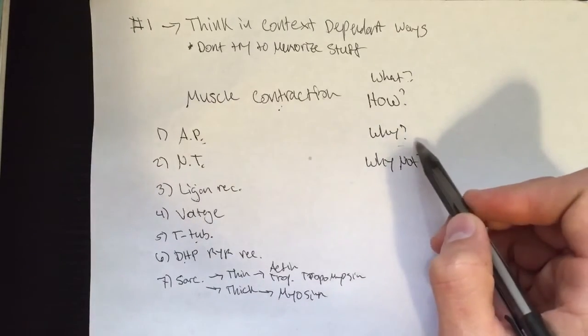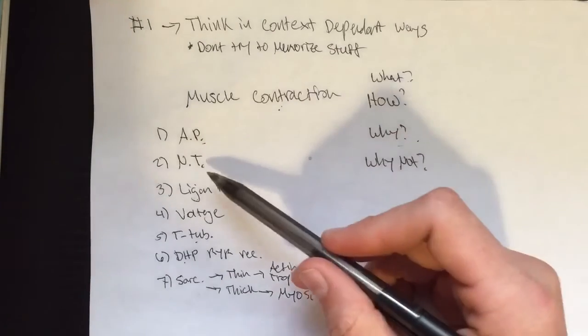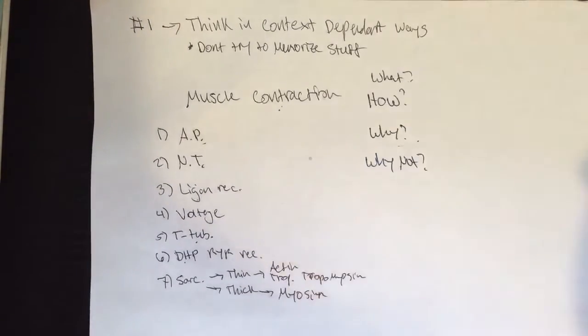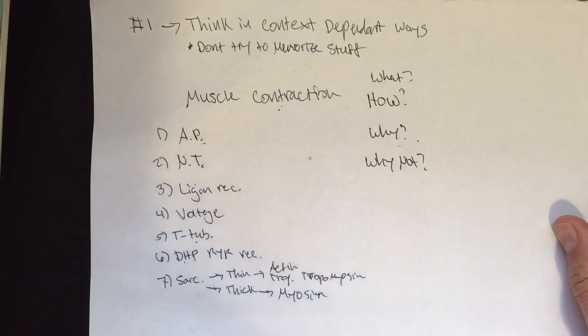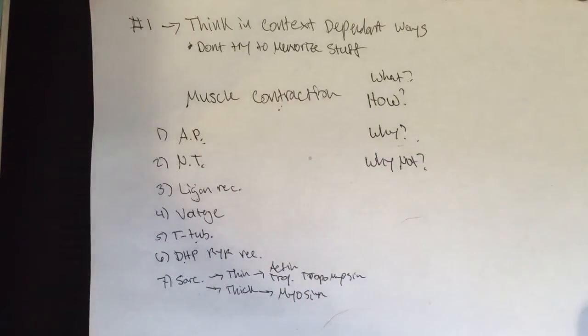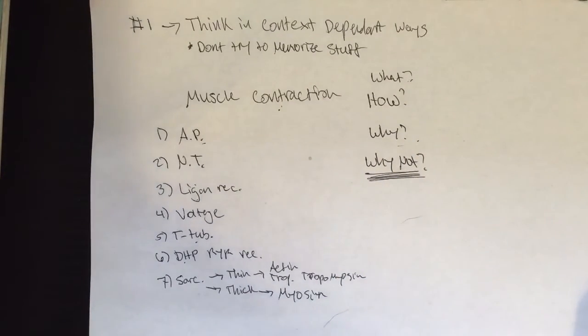Why is this working? That's an interesting question. Well, it's working because I have an action potential, because I had neurotransmitters that released from their vesicles via the SNARE protein, that I had a fully functional ligand receptor. It's working because basically all these things we talked about are working in order. You could go down and talk about each of those things again.